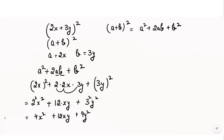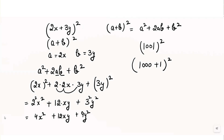Now if the question asks us to find the value of 1001 whole square without using a calculator, we have to make it simpler. We can rewrite it as (1000 + 1) whole square and use this identity to calculate the value.